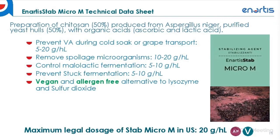The M in Stab Micro M stands for must. This is a great tool for modulating and controlling must ecology, especially when dealing with compromised fruit. Stab Micro M is easily suspended during fermentation and is readily separated during gross lees racking, so it can remain in suspension during fermentation without adverse effect on Saccharomyces cerevisiae. It is a preparation of Ketozan and purified yeast hulls. For producers practicing cold maceration, Stab Micro M can help mitigate the bloom of unwanted spoilage organisms, and it could also be applied to grapes being transported long distances.